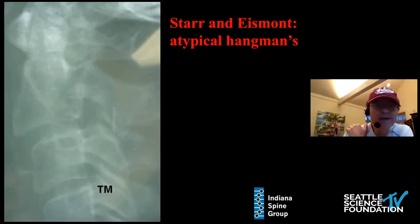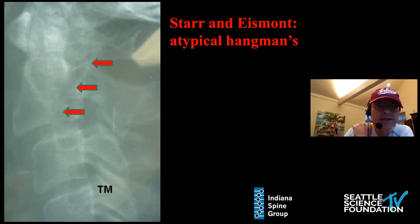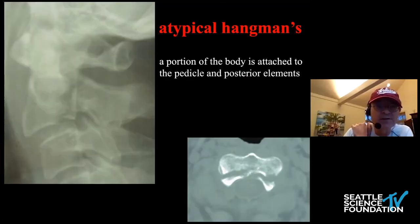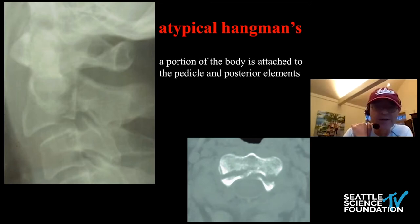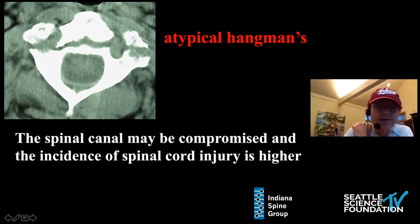Eismont described an atypical Hangman's fracture that involves the posterior body of C2. The interesting thing about these atypical Hangman's fractures is that they are not canal-expanding fractures. They are actually associated with a higher incidence of spinal cord injury because they do not expand the spinal canal, and also associated with a higher incidence of vertebral artery injuries because of this fracture pattern.